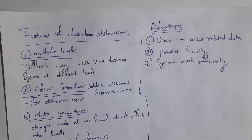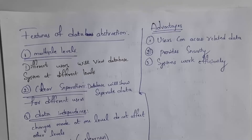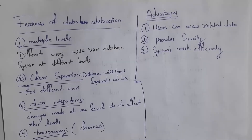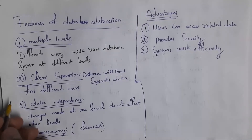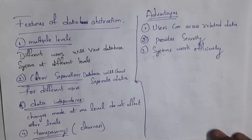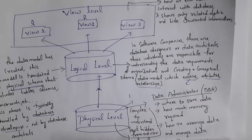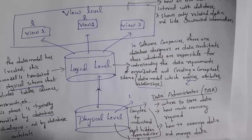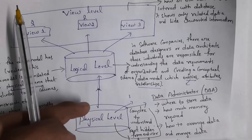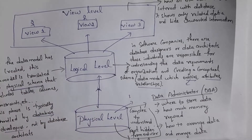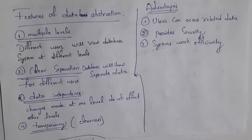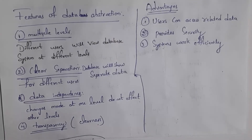Next I will cover the features of data abstraction. The first feature is multiple levels — data abstraction contains three levels, so different users view the database system at different levels. The second feature is clear separation — the database displays separate data for different users. The third feature is data independency — changes made at one level do not affect other levels. The fourth feature is transparency — meaning clearness — since the database shows only related information, the data is very clear.